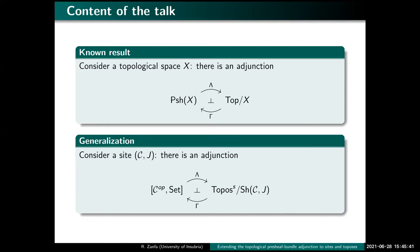We have this known result in topology. When we have a topological space X, there is an adjunction between the pre-sheaves over the space X and the bundles over X — that is, topological spaces over it. We wonder if we can do the same for an arbitrary small site. And in fact, we can. If there is a site CJ, a small site, we can build an adjunction in the same way, where instead of topological spaces we'll have toposes of a certain kind over our base topos. The properties of these adjunctions reflect what happens in the topological case.